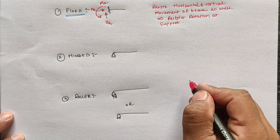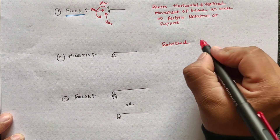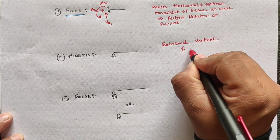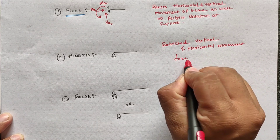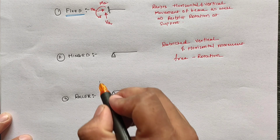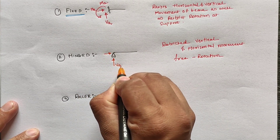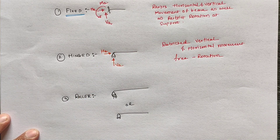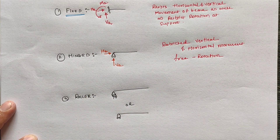For hinge support, it restricts vertical as well as horizontal movement but frees the rotation — meaning the support may rotate at its location but cannot move horizontally or vertically. This indicates that for hinge support there are two reactions: vertical reaction and horizontal reaction, but moment is free.